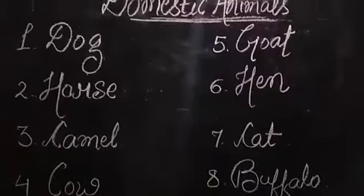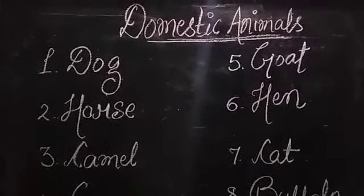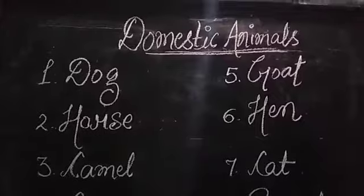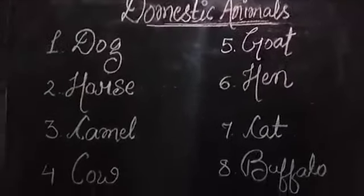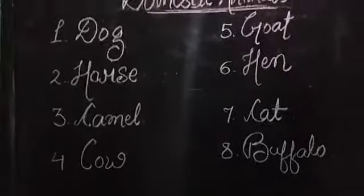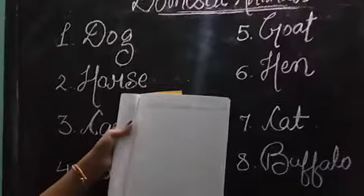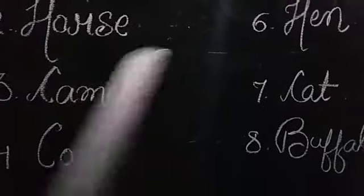See, students, you have understood some domestic animals. Then you have to write in your copy. It is given — domestic animal. Write the domestic animals' names. You have to write like this in your copy and learn it properly. You will learn and write.